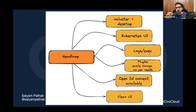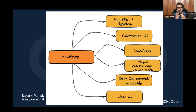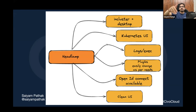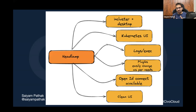Next is Headlamp, by Kinvolk. It is in-cluster but also has a desktop version. It provides a basic Kubernetes UI and has plugin support, so you can customize the UI without maintaining a fork of the repository. OpenID Connect is also available, and it has a clean UI.